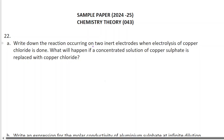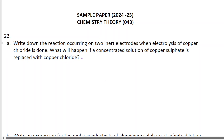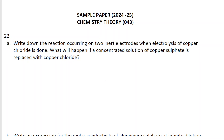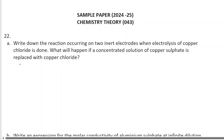Write down the reactions occurring at 2 inert electrodes when electrolysis of copper chloride is done. What will happen if a concentrated solution of copper sulfate is replaced with copper chloride? So here, with 2 inert electrodes, we are taking a copper chloride solution and doing electrolysis. During electrolysis, what reactions occur at the anode and at the cathode — that is being asked. And if concentrated copper sulfate is taken instead, what happens — that is also being asked. So first, let's take the product of electrolysis of copper chloride.